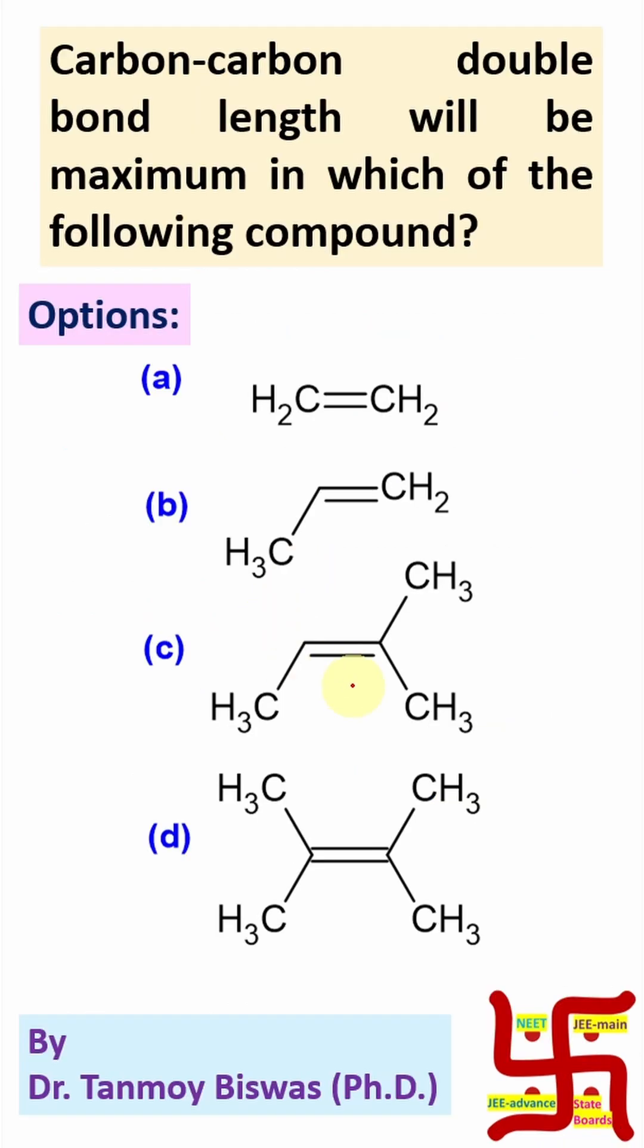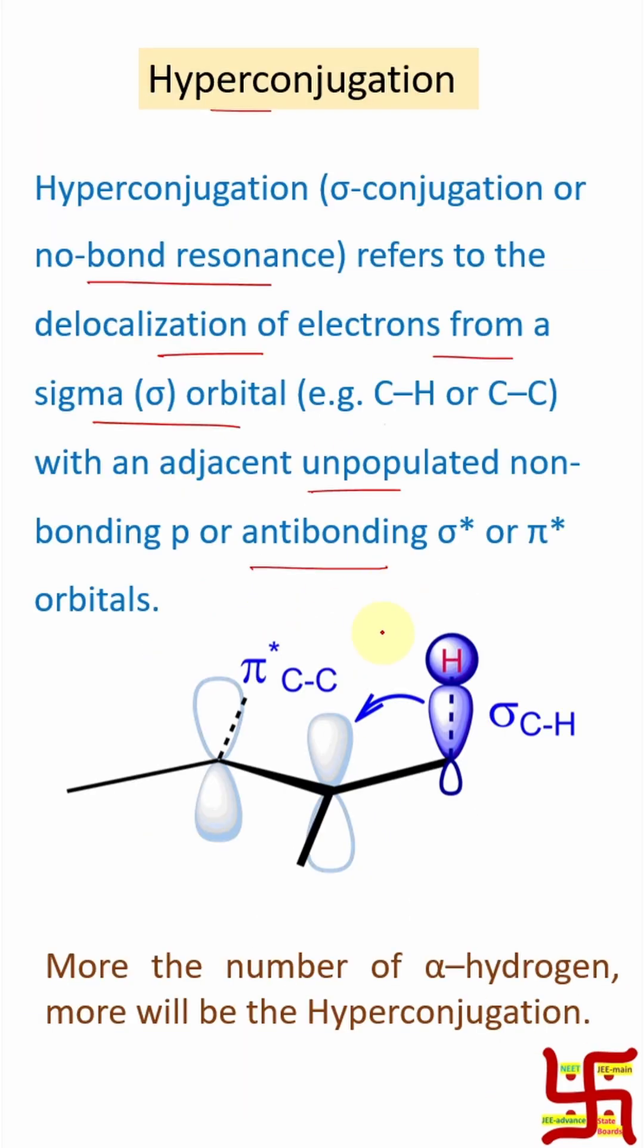Since we are talking here alkene, then we will consider the pi star. Now, if you look at this is a sigma bond of C-H. So, here two electrons are there.